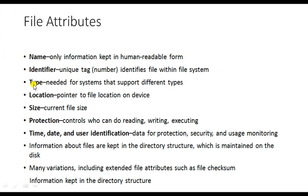Next is type. Type tells which kind of file it is — whether it is a text file, object file, or executable file. A normal user identifies a file by using the name, but an operating system identifies the file by using the type, specifically the extension. A text file has extension .txt, an image file has extension .jpg, a source file has extension .c, .cpp, or .java. The operating system understands the file by using its extension.